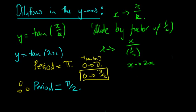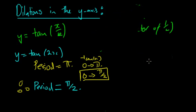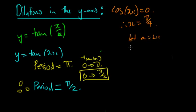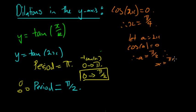What are the asymptotes? The first asymptote occurs when cos(2x) = 0, because that's when tan(2x) is undefined. Let a = 2x; then cos(a) = 0, so a = π/2, therefore x = π/4.